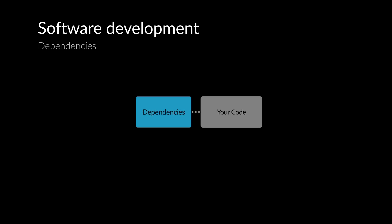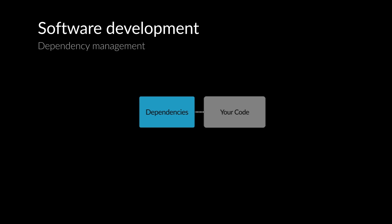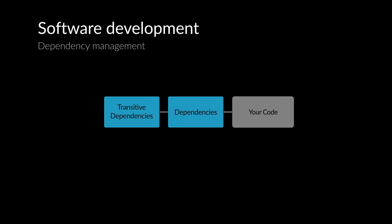For example, if you were developing a calculator app, you would make use of a math library dependency. These dependencies may themselves require other libraries known as transitive dependencies. For example, the math library may require a big numbers library.